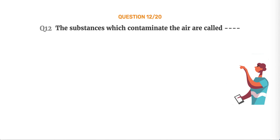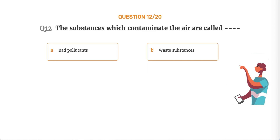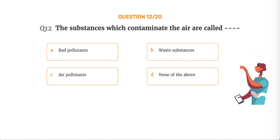Question number 12. The substances which contaminate the air are called: Option A, Bad pollutants. Option B, Waste substances. Option C, Air pollutants. Option D, None of the above.